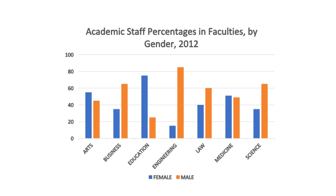Here is the academic writing task 1. The graph shows the percentage of male and female academic staff members across the faculties of a major university in 2012. Summarize the information by selecting and reporting the main features and make comparisons where relevant. You should write at least 150 words. Pause the video and make your own points before going further.